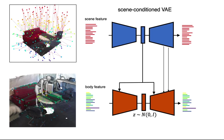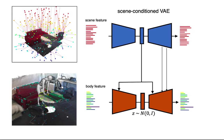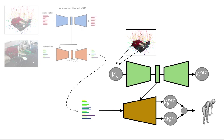Now we change the VAE to a conditional VAE to reconstruct the body features conditioning on different 3D environments. In order to get a plausible body, the MLP takes the reconstructed body feature and regresses a full-body mesh. In order to regress the body vertices, we have another autoencoder to encode selected scene-vertex locations on the scene mesh as the condition.